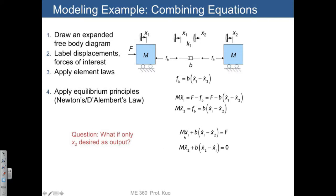Here we've rearranged these equations in input-output form. We have one equation that has x1 double dot and f, and then we have the other equation including x2 double dot. But what if we weren't interested in x1 at all?